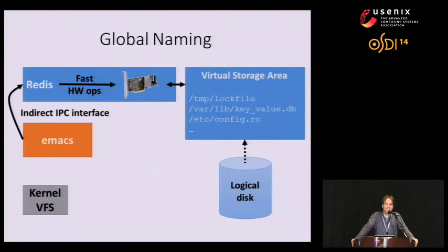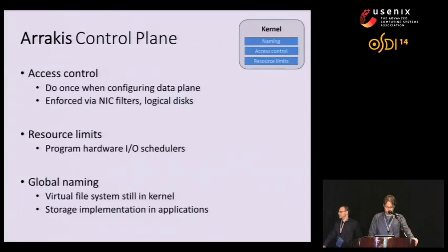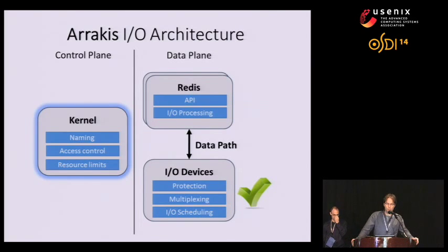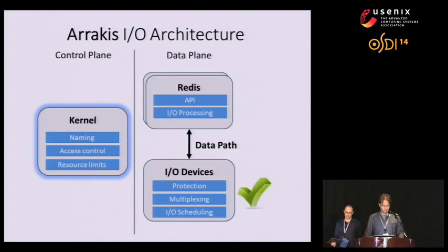Q: From Peter Desnoyers, Northeastern: How does this handle very high connection rate applications, like a large web server? A: The idea is that you configure resource limits in much larger chunks. A web server would be allocated a range of port numbers — say ports 1,000 to 2,000 — and within that range the web server is free to do connection management and allocate port numbers entirely in user space without invoking the kernel.